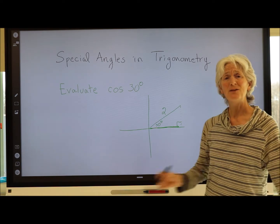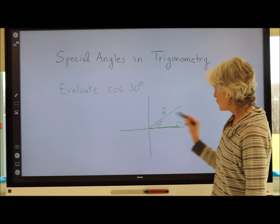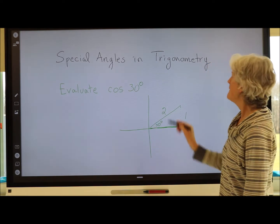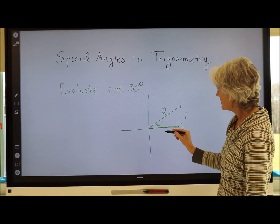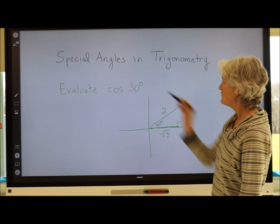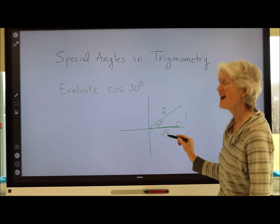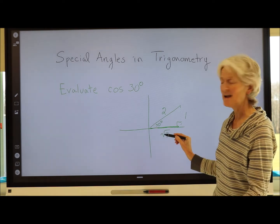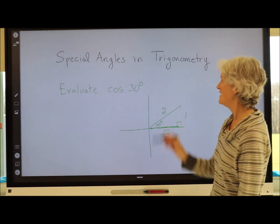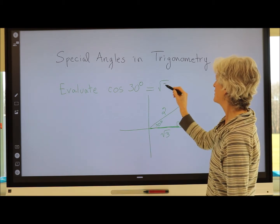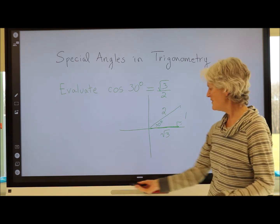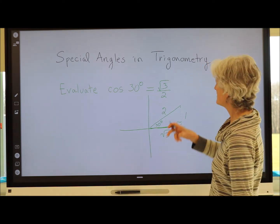With hypotenuse = 2, the side opposite 30° is 1, and the side opposite 60° is √3. Now I can evaluate cos(30°): it's the adjacent side over the hypotenuse, and since the adjacent side is always the x-value on the coordinate plane, cos(30°) = √3/2.